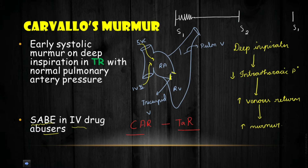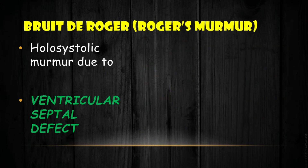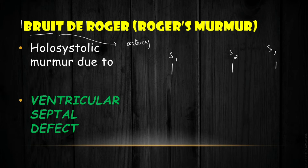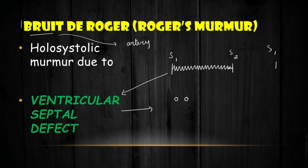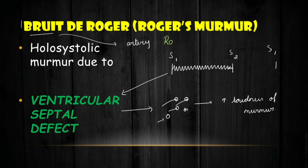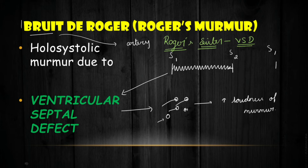Bruit de Roger or Roger's murmur is a holosystolic murmur occurring throughout the entire systole, seen mainly in ventricular septal defect (VSD). When the defect is very small, the small opening creates more turbulence in blood flow, leading to increased loudness of the murmur. Mnemonic: Roger's sister got affected by VSD — Roger's murmur, Systolic, due to Ventricular Septal Defect.